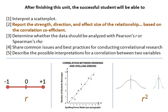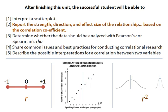A correlation coefficient and a scatter plot are the ways we can use to represent the strength and direction of a relationship between two variables. The other aspect for this learning objective is to be able to determine the effect size of a relationship — that is, how good is this correlation when you want to make predictions?